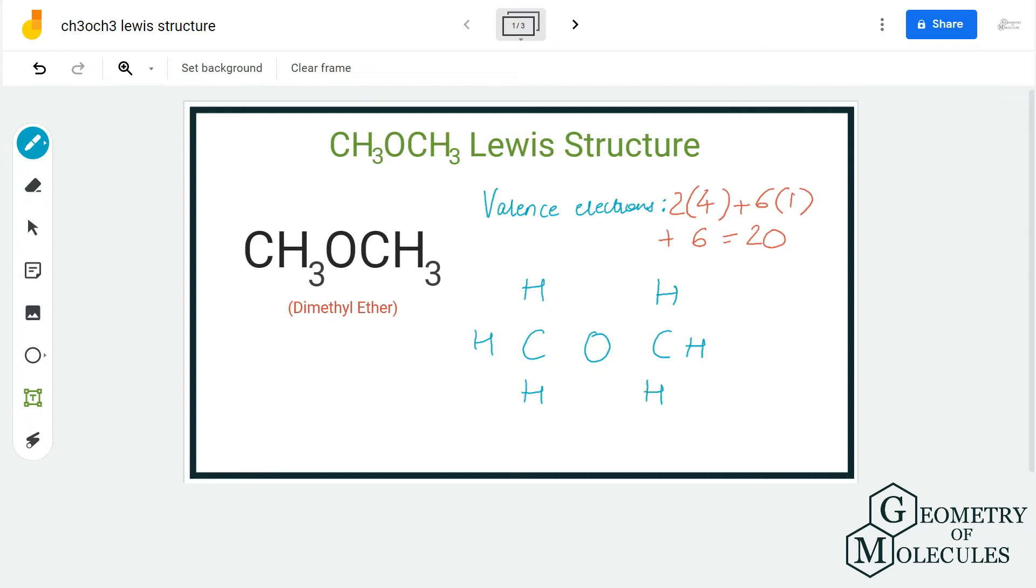We have the arrangement of atoms over here. Now we shall start putting electron pairs to show the chemical bonds. Each one takes up two valence electrons, and here we are going to place a pair of electrons between carbon and hydrogen atoms and carbon and oxygen atoms.